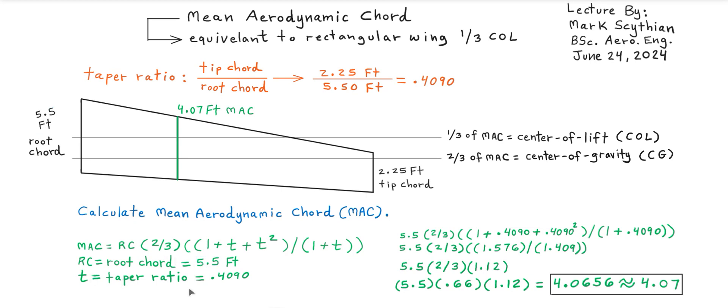Calculating the taper ratio, that is the tip chord divided into the root chord. So in this case, 0.4090.